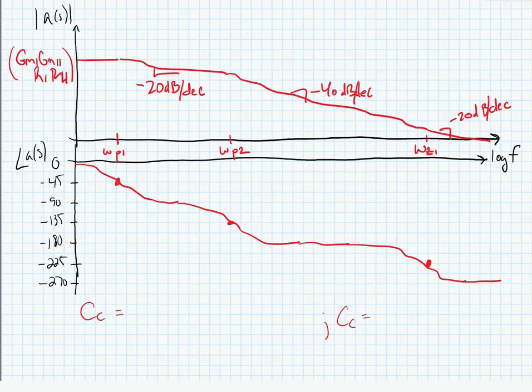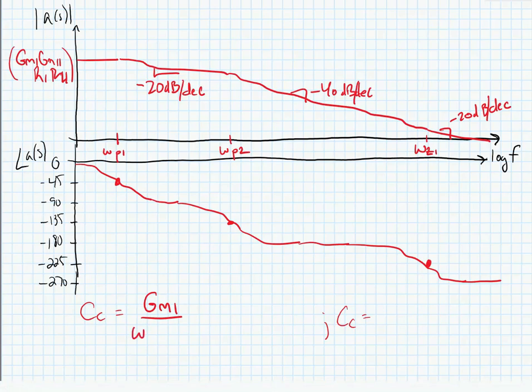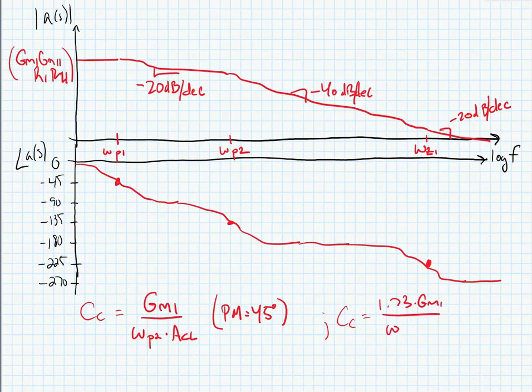We've already learned how to size our compensation capacitor. It should be Cc equals gm1 divided by omega p2, which gives gm1 times gm2 divided by omega p2 times Acl. This would be for a phase margin of 60 degrees.